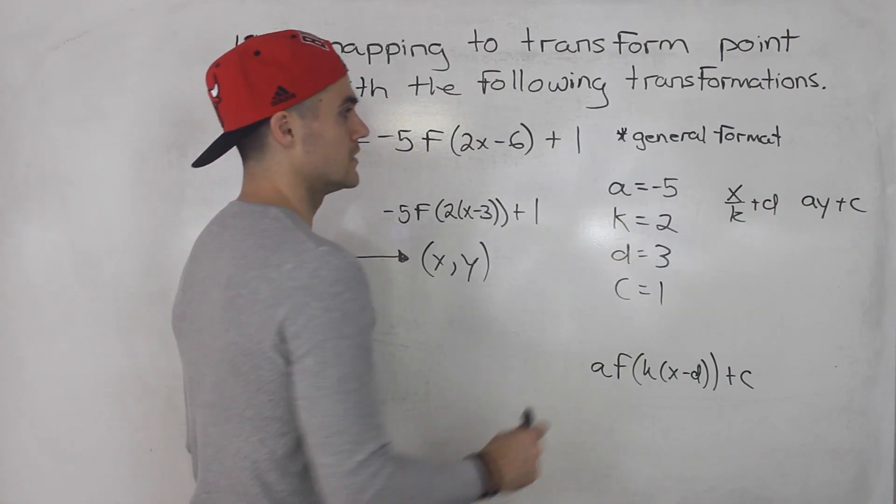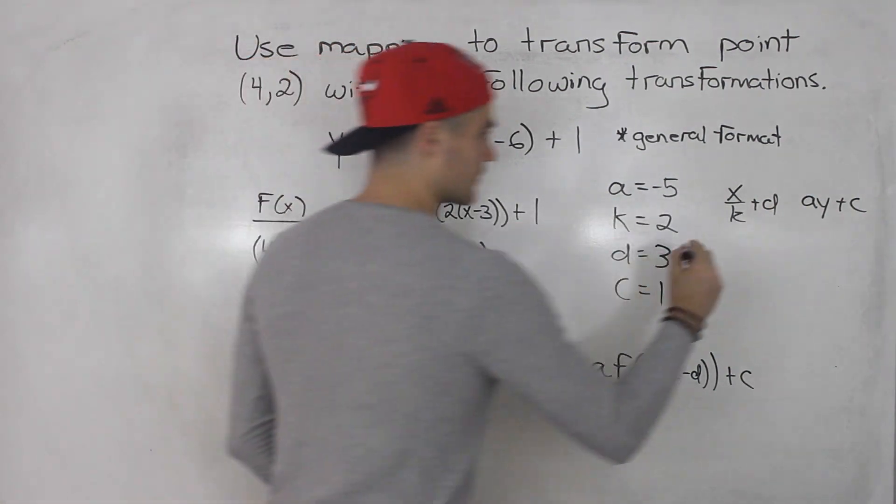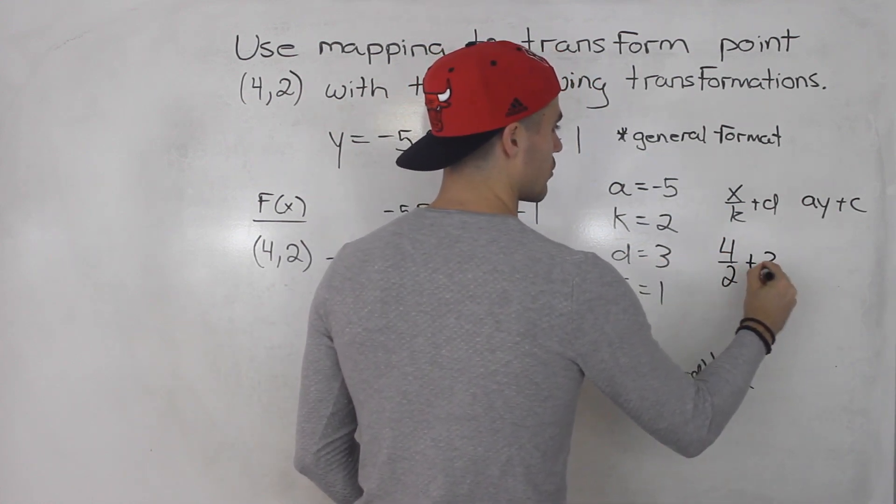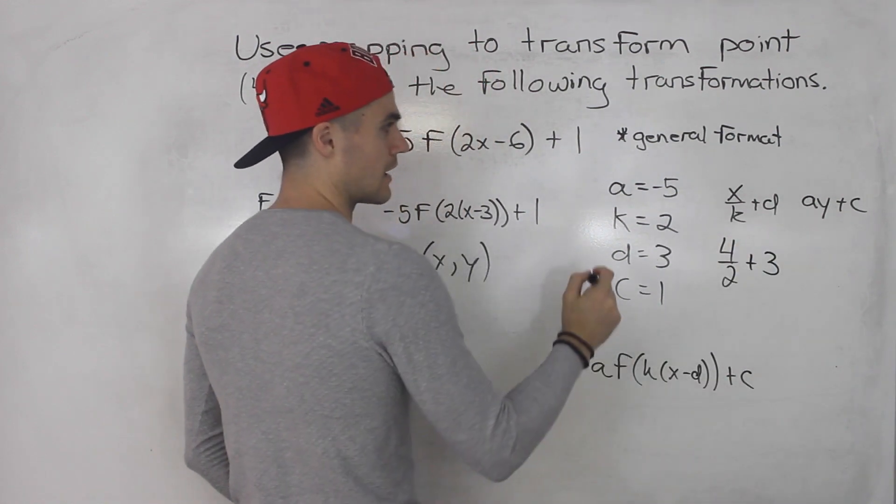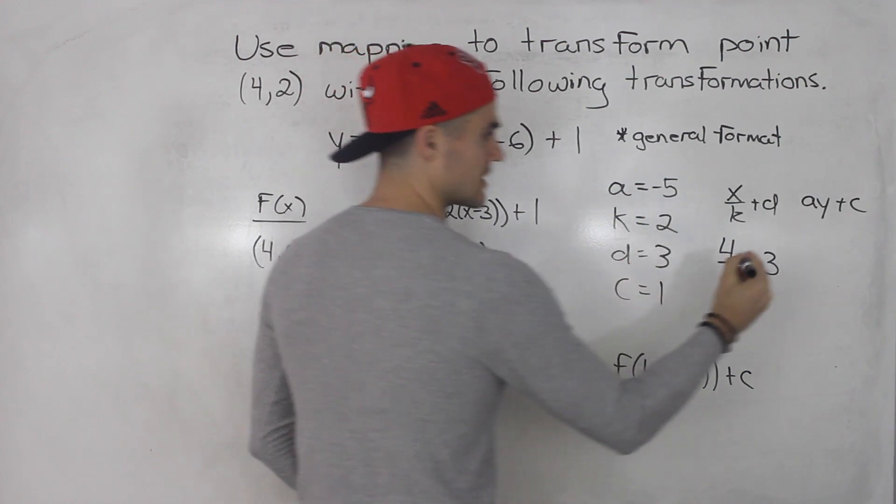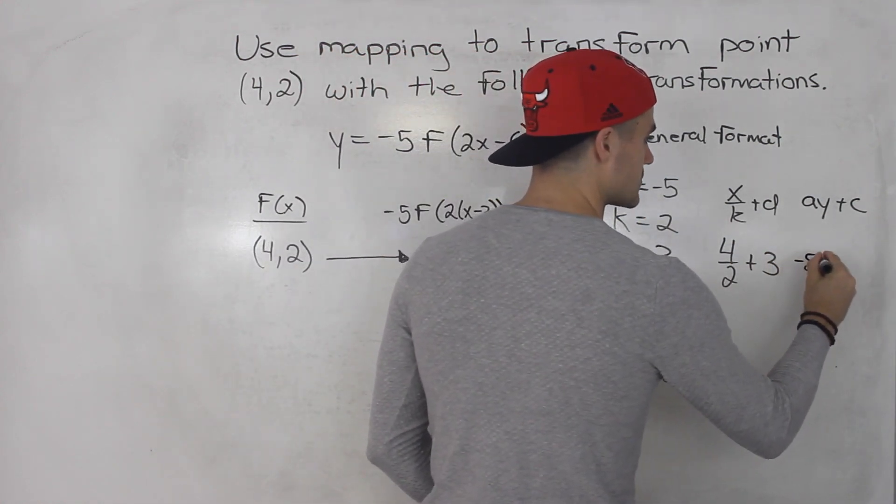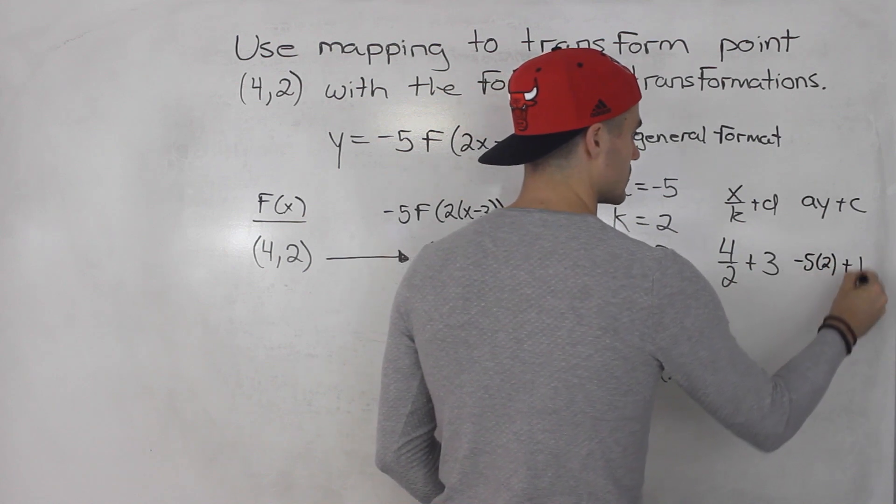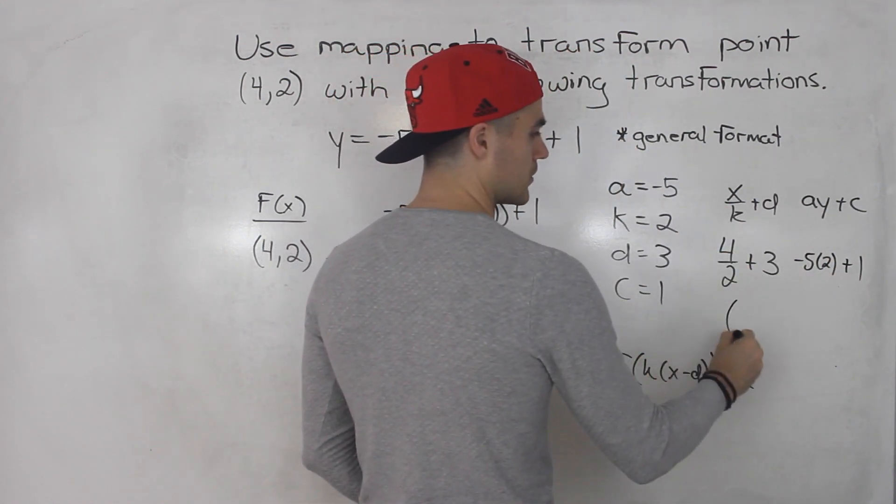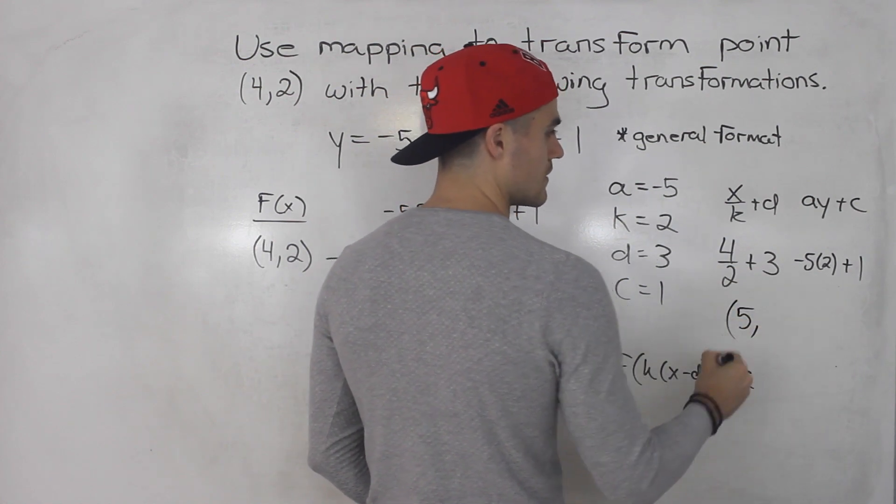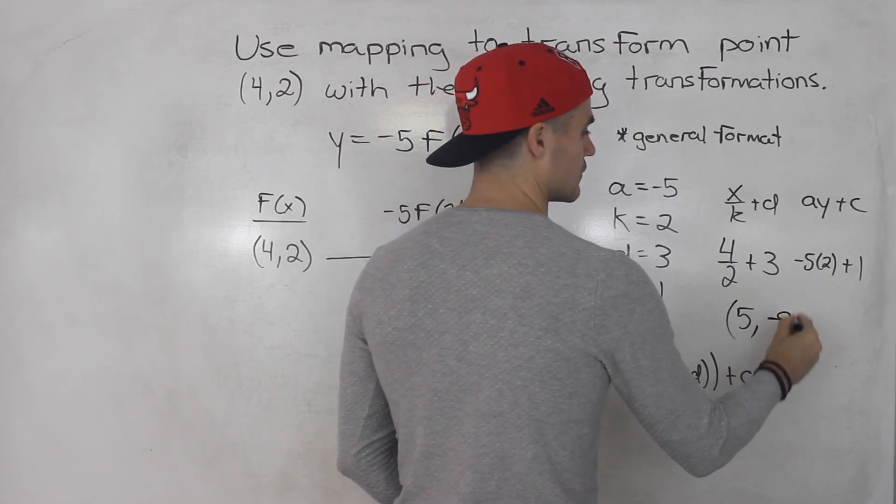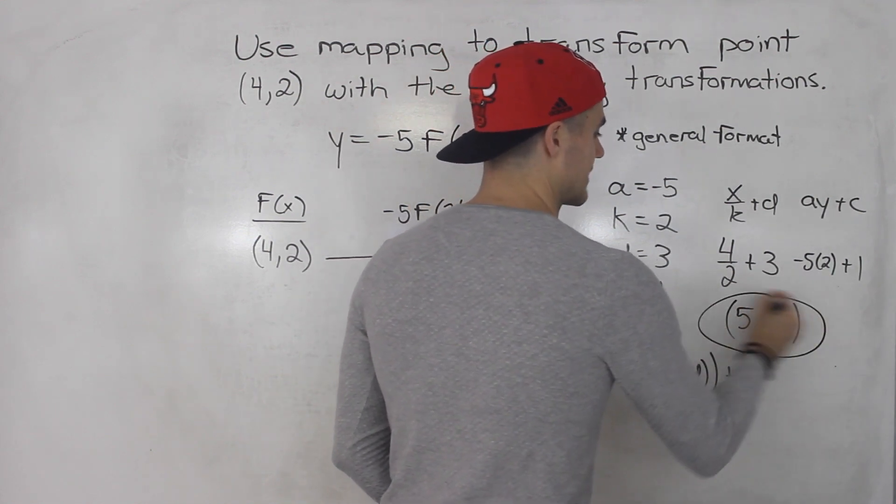The x value that we're transforming is the 4, so we're going to take the 4 divided by 2, and then we're going to add 3, that d value. And then the y value of 2, we're going to multiply by a, which is negative 5, so we're going to have negative 5 times 2 plus c, which is 1. So 4 over 2 plus 3, that would be 2 plus 3, which would give us 5. And then negative 5 times 2 is negative 10 plus 1, negative 9.